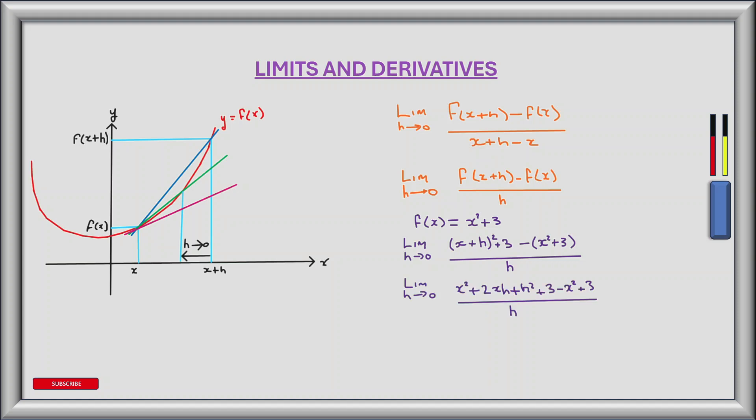Expanding that out, we get the limit as h tends to zero of x² + 2xh + h² + 3 minus x² + 3, all divided by h. Simplifying, this becomes the limit as h tends to zero of h(2x + h) divided by h, which is the limit as h tends to zero of 2x + h. As h tends to zero, this tends to 2x. So 2x is the derivative of x² + 3, meaning f'(x) = 2x, which gives us the gradient of the slope for any value of x.